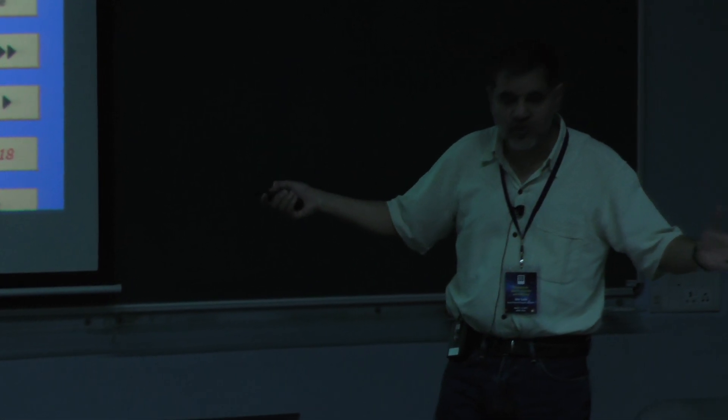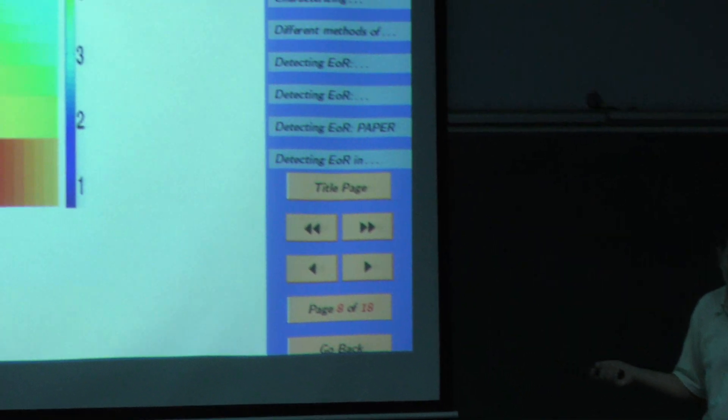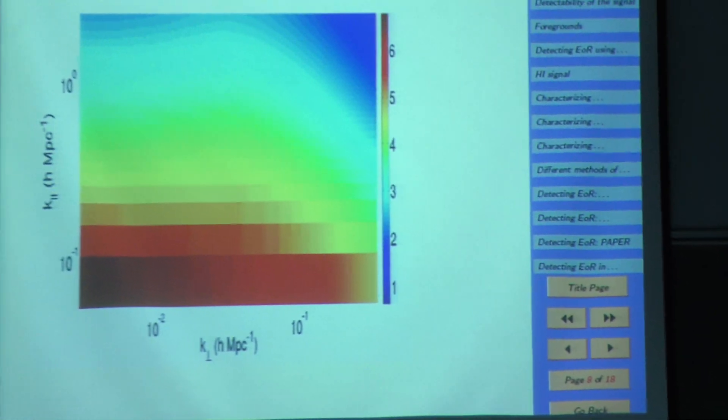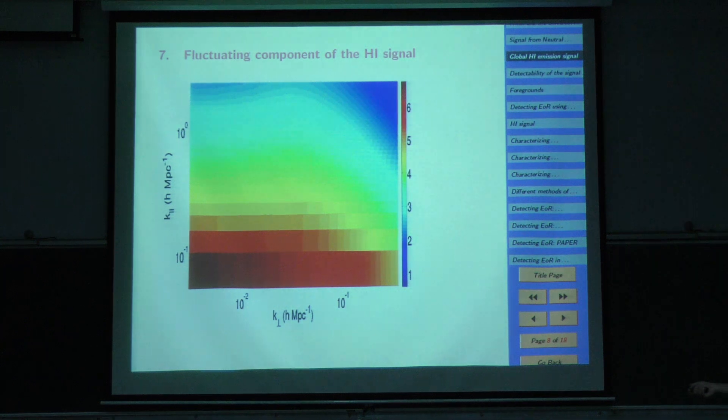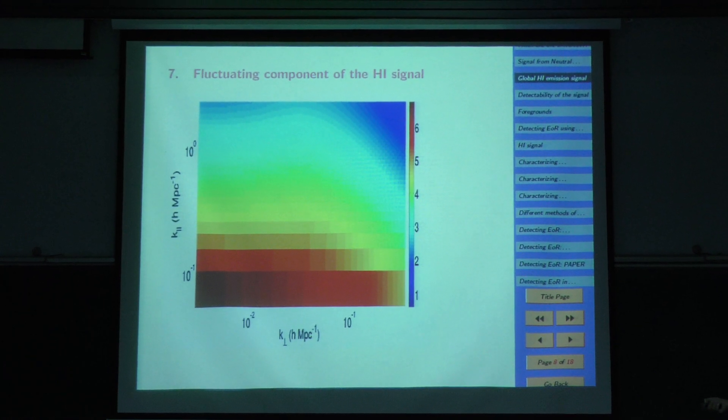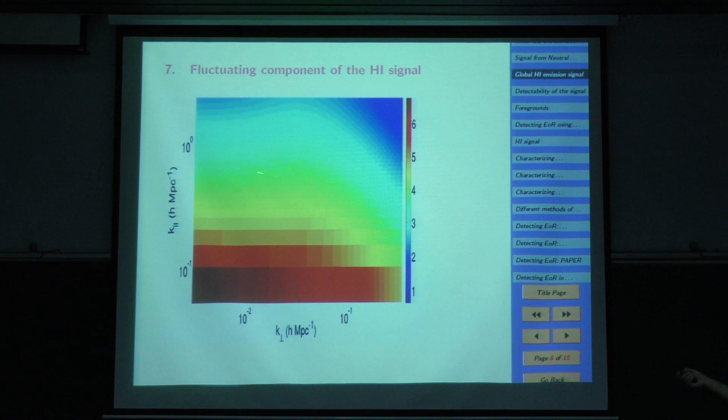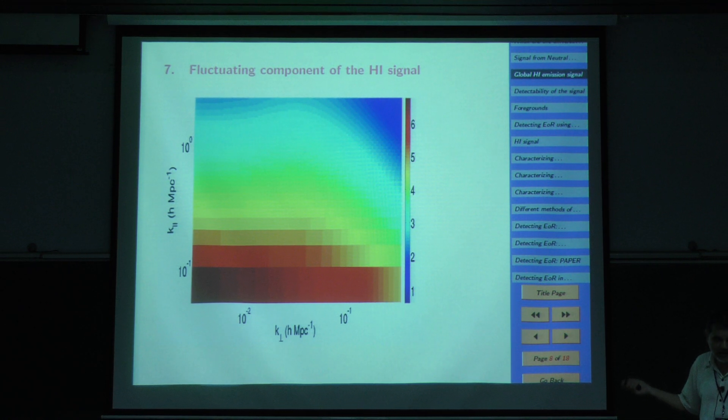We can't see the global signal. For global signal, there are experiments going on, including one in my institute, to actually look at the global signal. Signal to noise is not a problem with global signal. Make a small dipole and calibrate it well. You have a chance of looking at the global signal. So it's a very inexpensive experiment. Unfortunately, it's very difficult to do that. So the whole point is there is a fantastic amount of focus on interferometers.